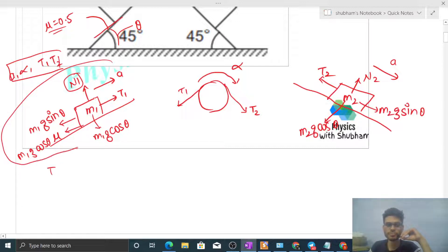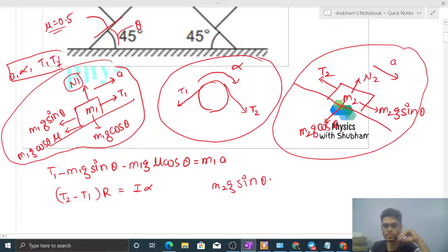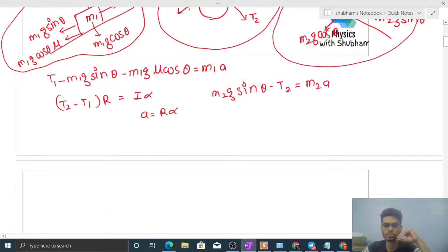From here F equals M A. That is T1 minus M1 G sin theta minus M1 G mu cos theta equals M1 into A. Here what will you write? Torque equals I into alpha. It means net torque in clockwise direction, that is T2 minus T1 into R, equals I into alpha. And here, F equals M A means net force in downward direction: M2 G sin theta minus T2 equals M2 into A. The fourth equation is the relationship between A and alpha: linear acceleration will be R into alpha for no slipping between the string and pulley, just as we discussed in the previous problem.